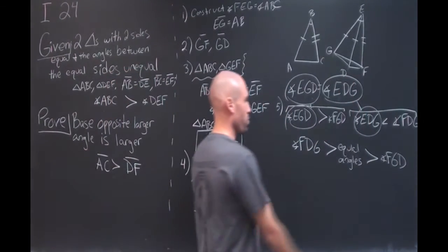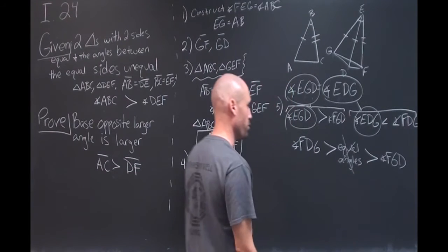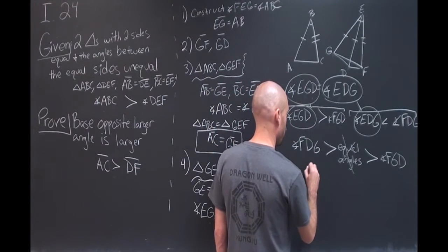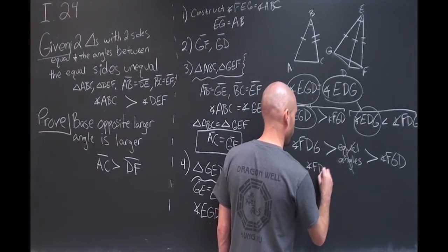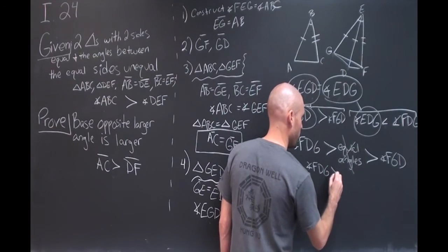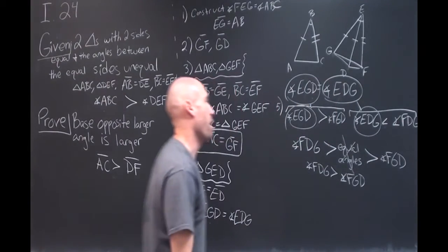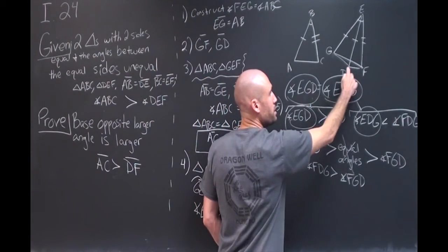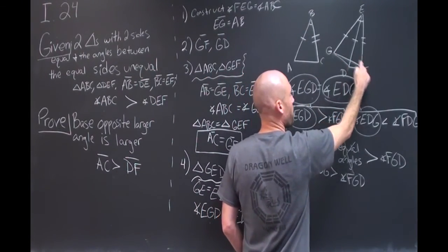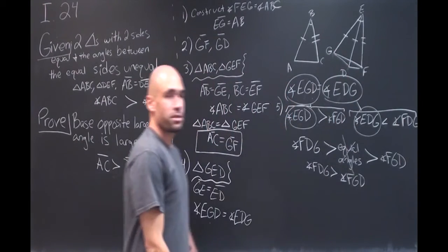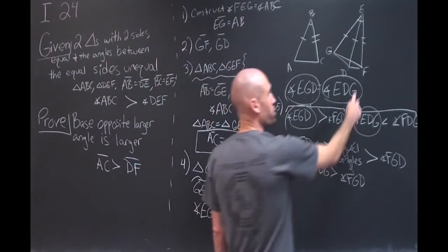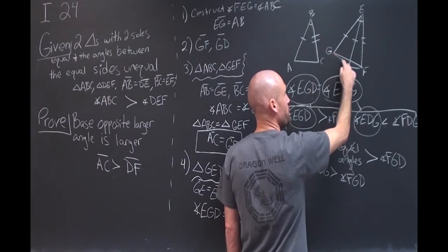So set up this way, we're just going to get rid of the middle term. We have FDG is greater than FGD. So notice that both of our angles are now with this one triangle, triangle FGD.